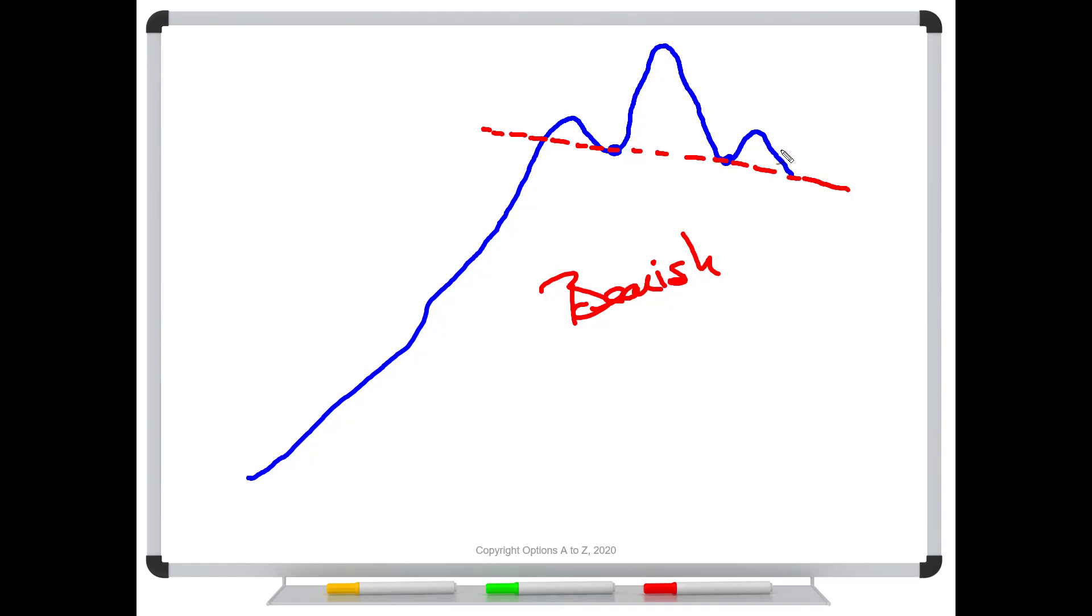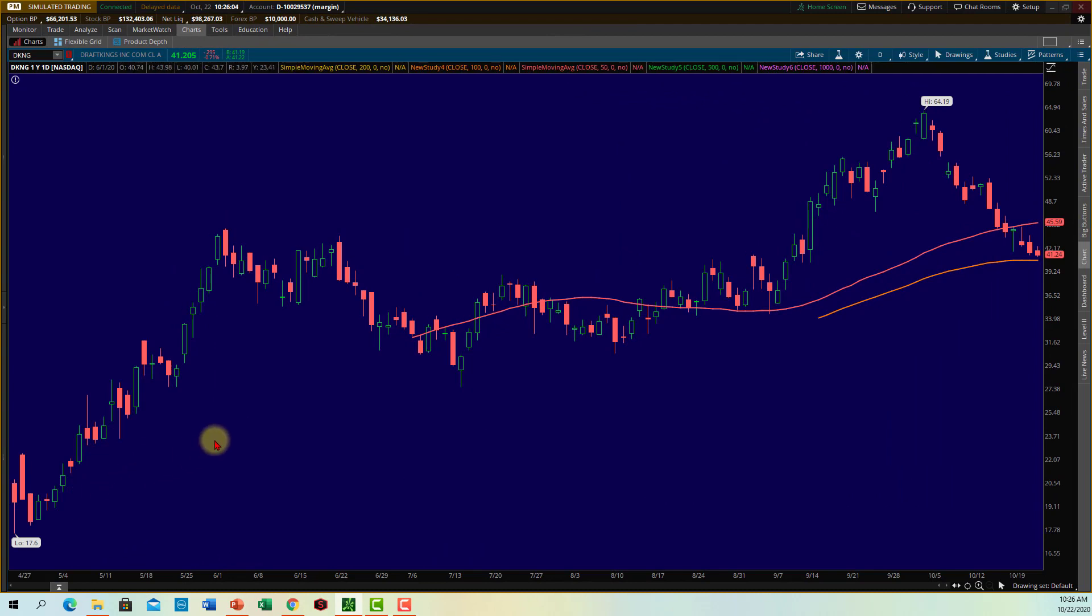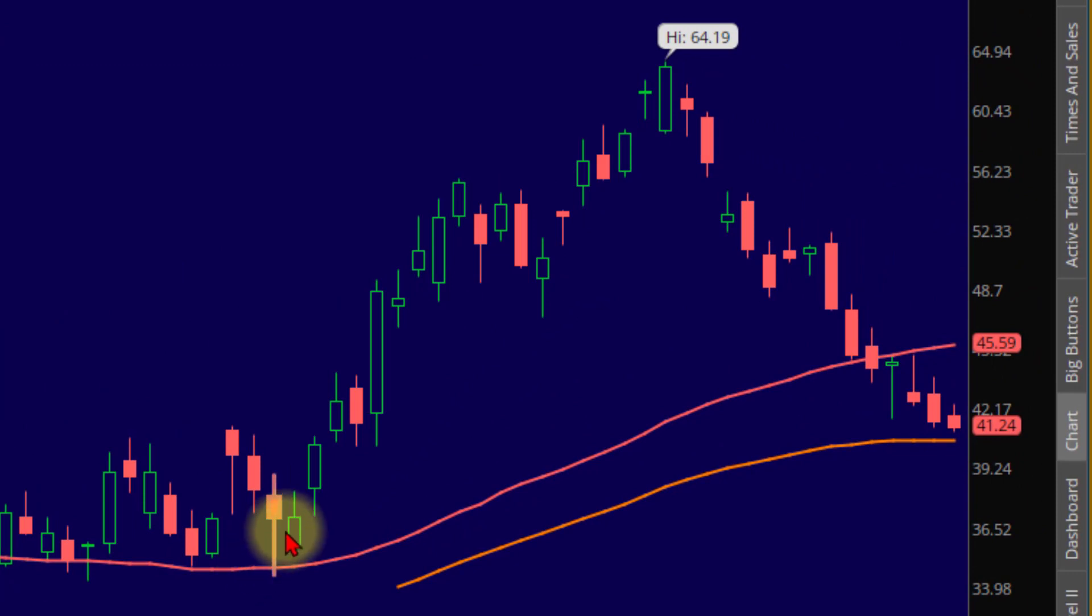So with those basics, let's swing over to the Thinkorswim platform and take a look at DraftKings. So here's DraftKings. Nice performance through the year. But notice we went through this sideways motion here in the center. And then we went off on this new uptrend right through here. But also notice that once this trend was started, we got this little pullback. So this is the first shoulder right here. And as I talked about, it didn't break the overall trend. And then we went on to a new high. This is the head.